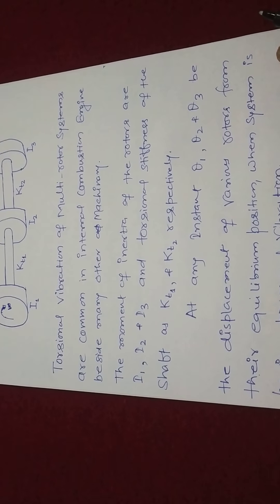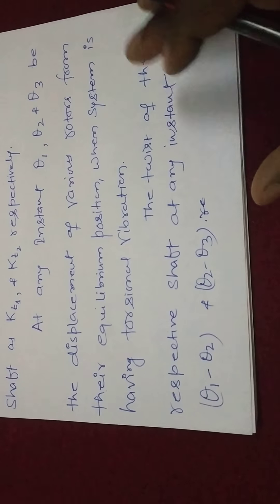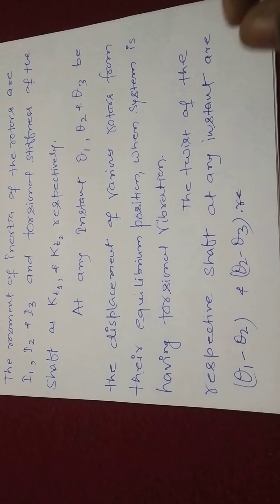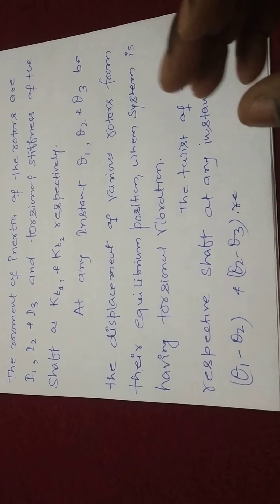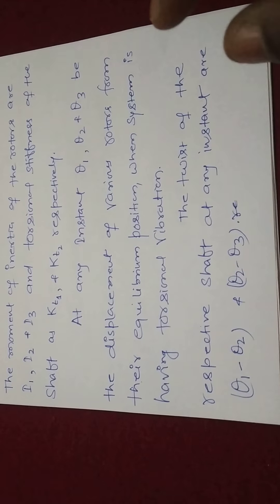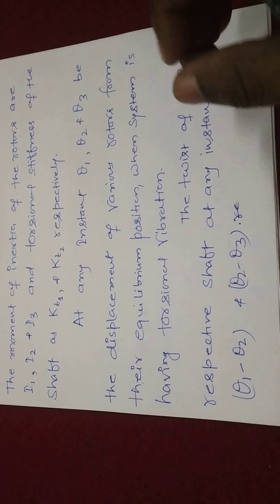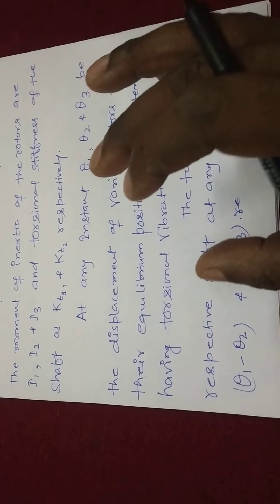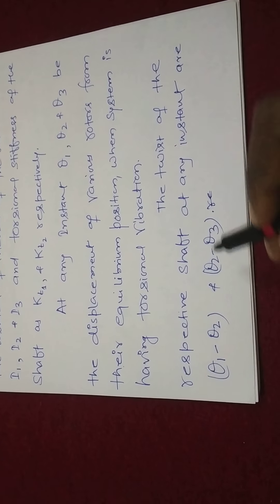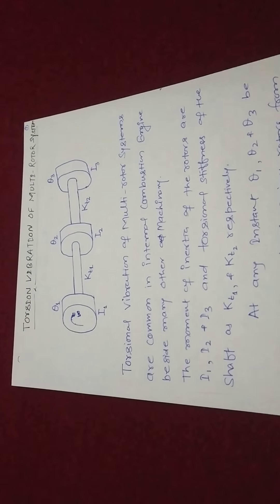The displacement of various rotors at the equilibrium position during torsional vibration is noted. The twist of each shaft at any given instant of time — for example, at 2 seconds after starting — should be written in relative format as theta 1 minus theta 2, and theta 2 minus theta 3. This difference is how we express relative twist.